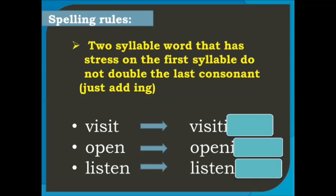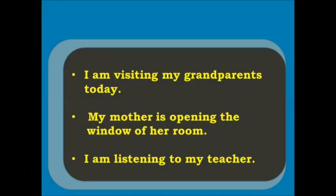For a two-syllable word that has stress on the first syllable, do not double the last consonant — just add ing. For example: visit → visiting, open → opening, listen → listening. For example: I am visiting my grandparents today. My mother is opening the window of her room. I am listening to my teacher.